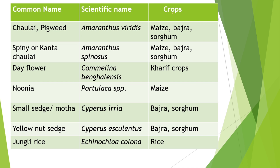Kharif weed examples: first, Choli (pigweed), scientific name Amaranthus viridis, found in maize, bajra and sorghum. Second, Spinae or Kata Cholai, scientific name Amaranthus spinosus. Third, Deflark, Commelina benghalensis. Next, Nunia — Portulaca species. Small sage or Motha — Cyprus eria. Yellow nut sedge — Cyperus esculentus, mainly found in bajra and sorghum. Jungli rice — Echinochloa colona, found in rice.